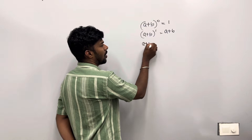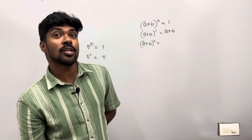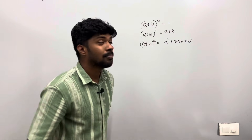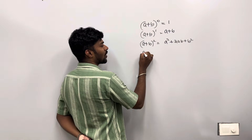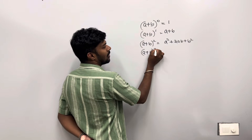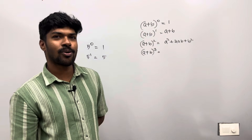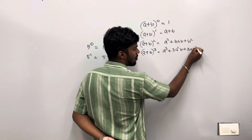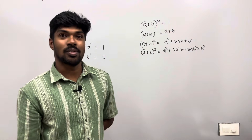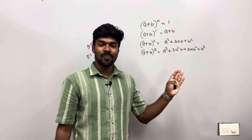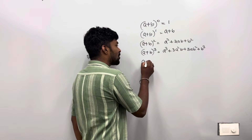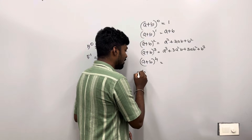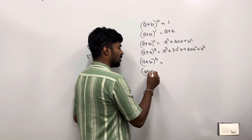A plus B whole raised to 2 gives A squared plus 2AB plus B squared. A plus B whole raised to 3 gives A cube plus 3A squared B plus 3AB squared plus B cube. This is the equation, this is the answer.